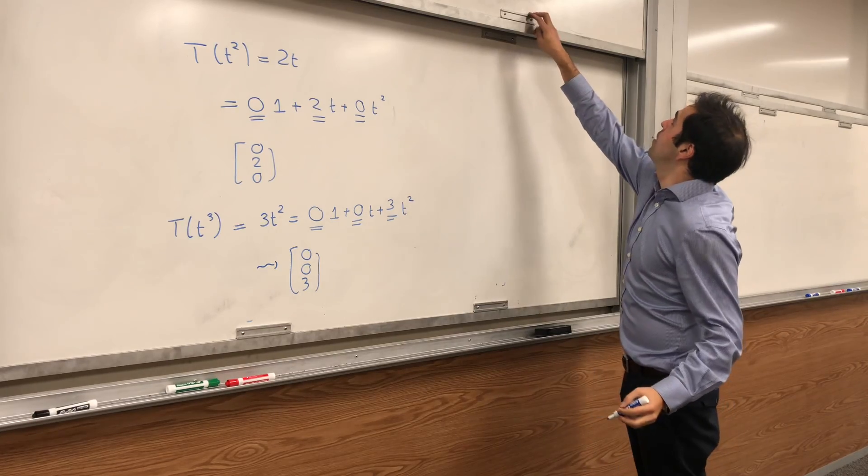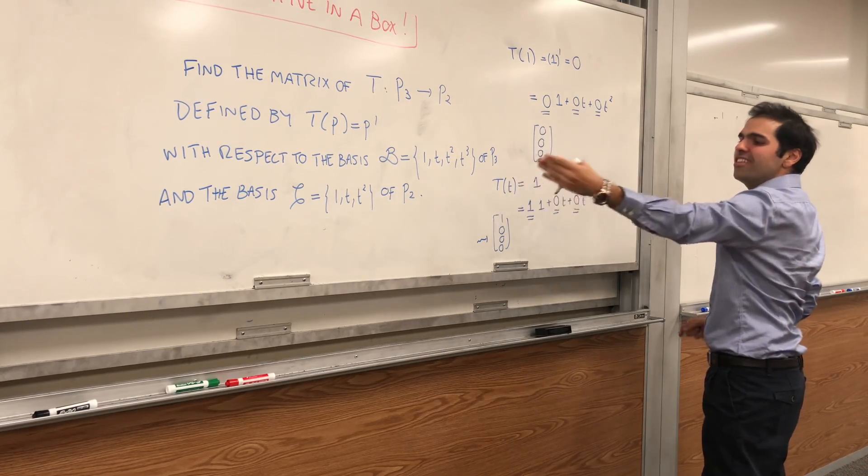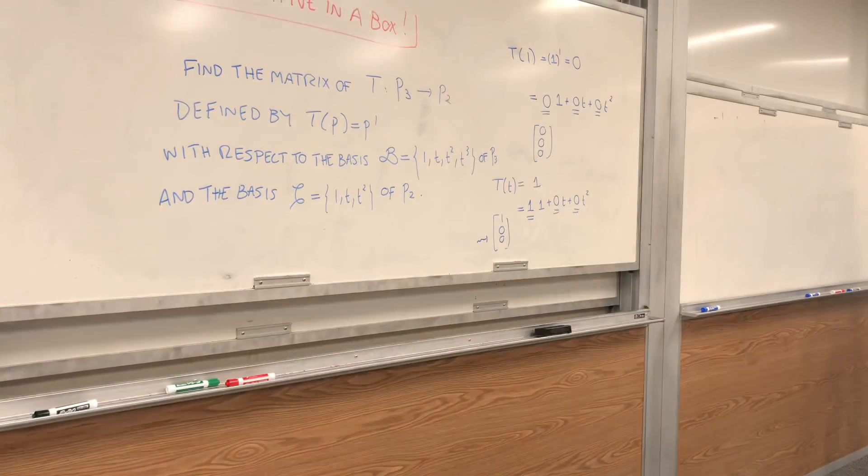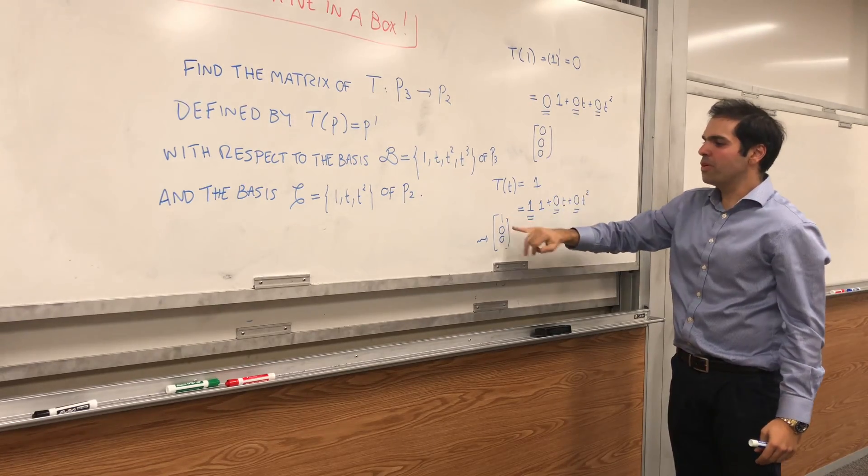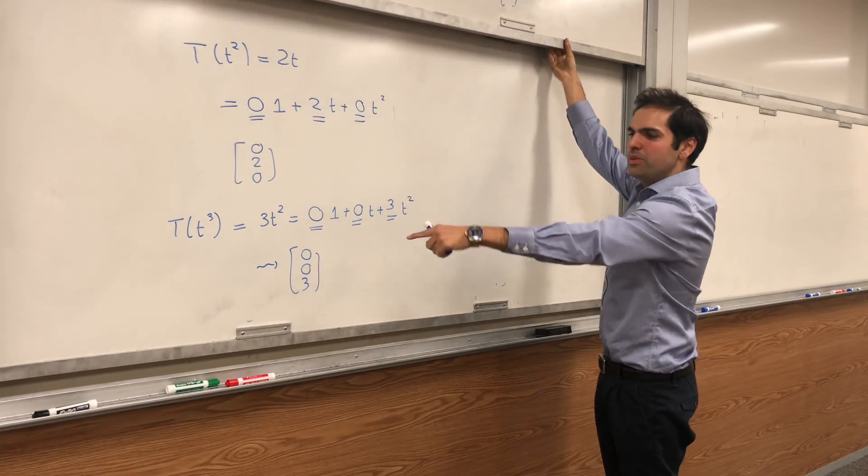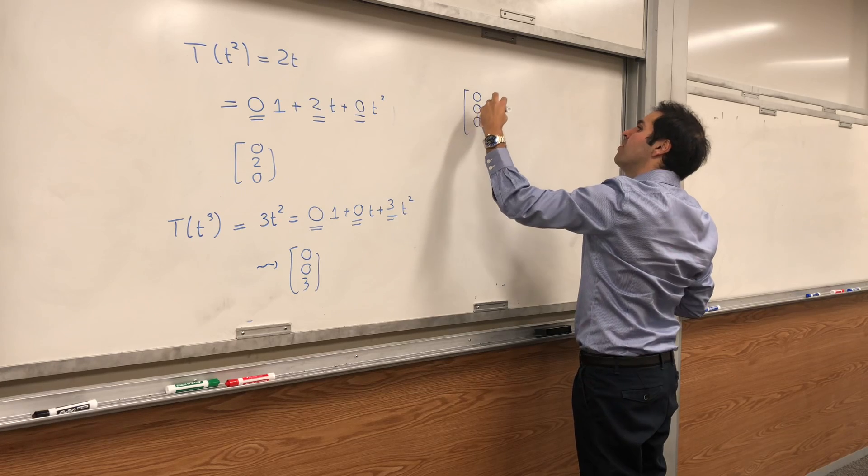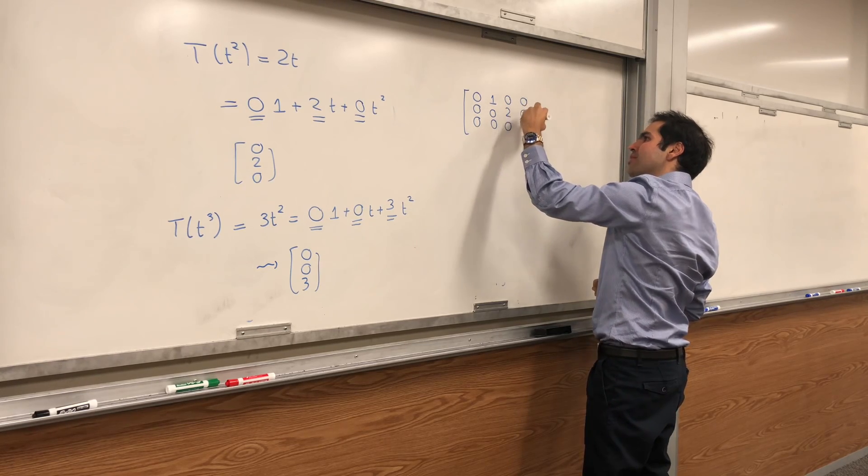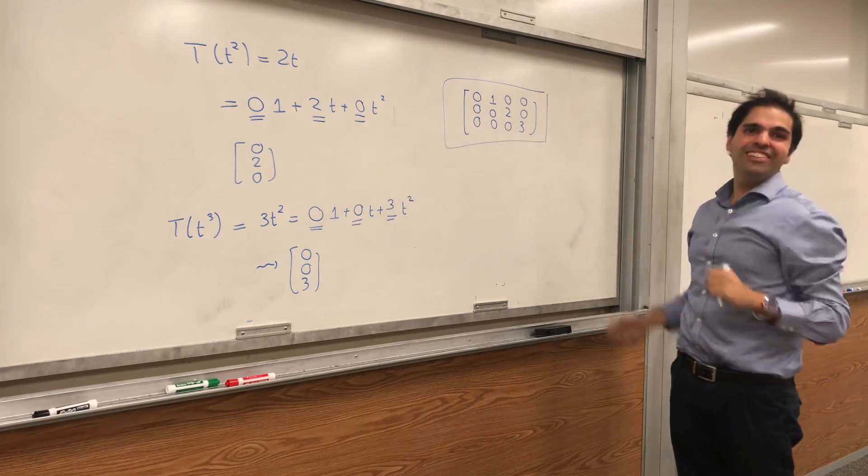And then all you need to do is put everything in a matrix. So you get the matrix: 0, 1, 0, 0; 0, 0, 2, 0; and 0, 0, 0, 3. And there you go, your derivative in a box.